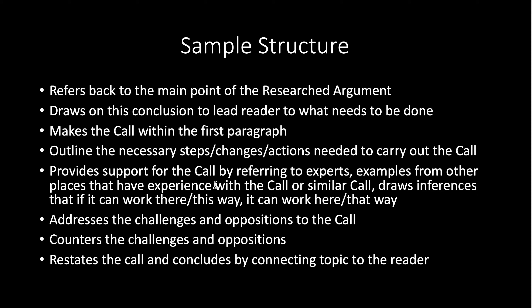And then our sample structure — you've got to refer back to the main point. Basically, you might say something like, if we know that X is not a good thing, what is a reasonable change to fix it? And then you start showing what needs to be done. So draw on that conclusion. First paragraph, you're referring back to your researched argument's conclusion and making your call — here's what needs to be done. Then the rest of your paper or section can outline the necessary steps and changes or the actions needed to carry out the call, providing support by referring to experts, examples from other places that have experience with this call or a similar call. Draw those comparisons and say if it worked there, it can work here. Draw analogies.